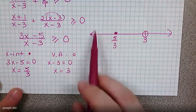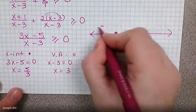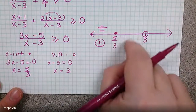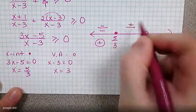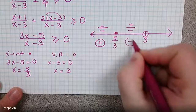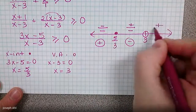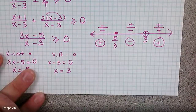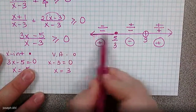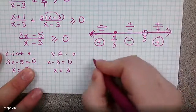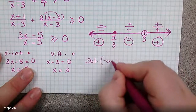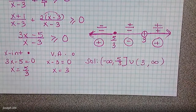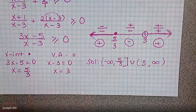Testing zero to the left: negative over negative gives positive. In between five-thirds and three, test two: three times two minus five is positive over two minus three which is negative — altogether negative. To the right of three, test something larger and get positive. We want greater than zero, so we shade the positive regions. The solution in interval notation is negative infinity to five-thirds, bracket included, union three to infinity with a parenthesis.